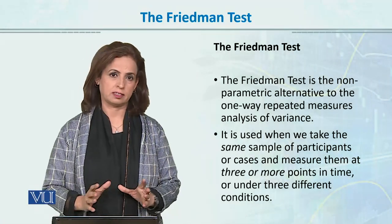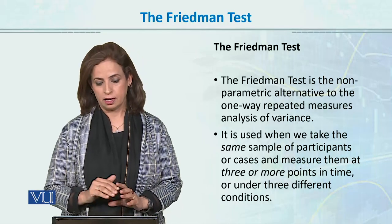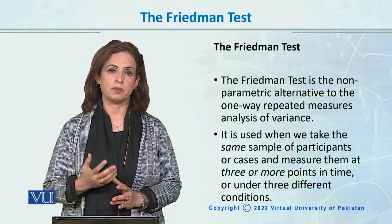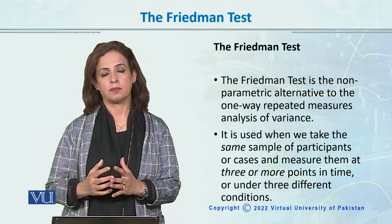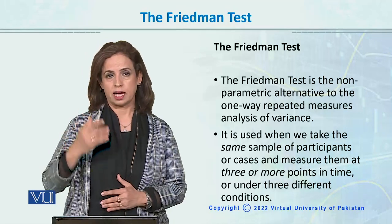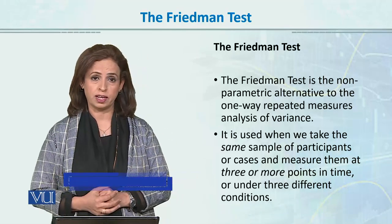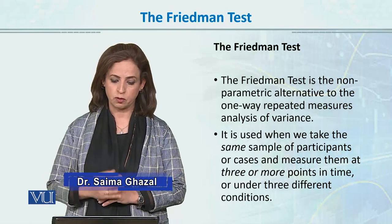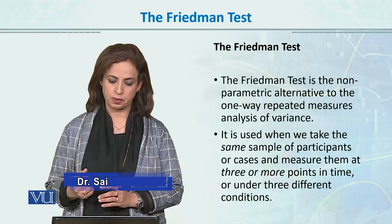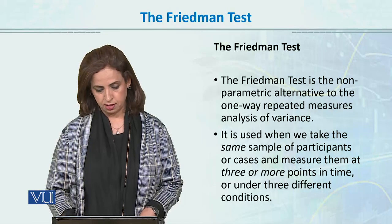Moving forward with the non-parametric test — this is the last non-parametric test we will be talking about. The Friedman test is the non-parametric alternative to the one-way repeated measures ANOVA. It is used when we have two groups with the same subjects measured at time one, time two, time three, but the assumptions for parametric tests are not fulfilled. It is used when we take the same sample of participants and measure them at three or more different time points or under different conditions.